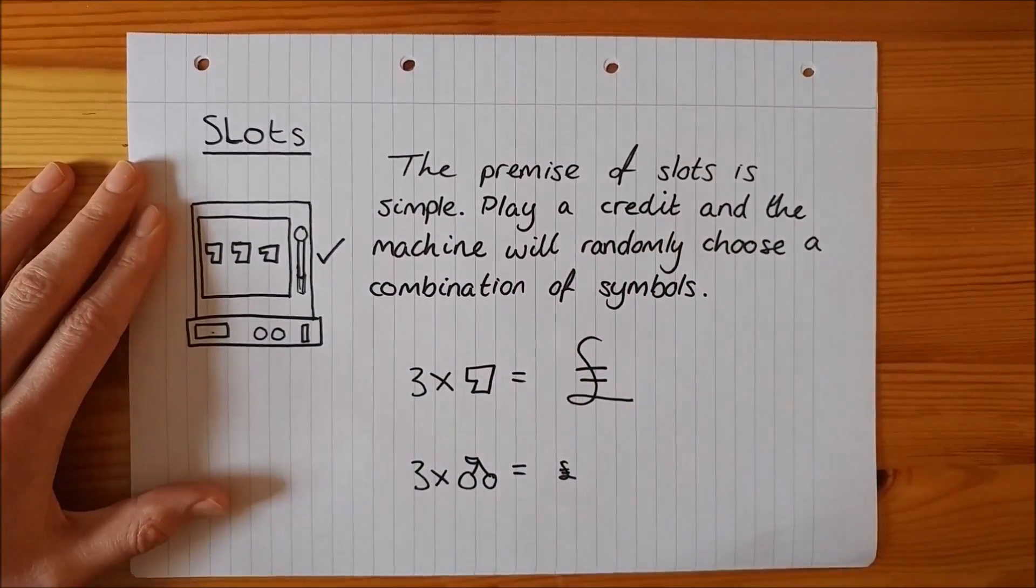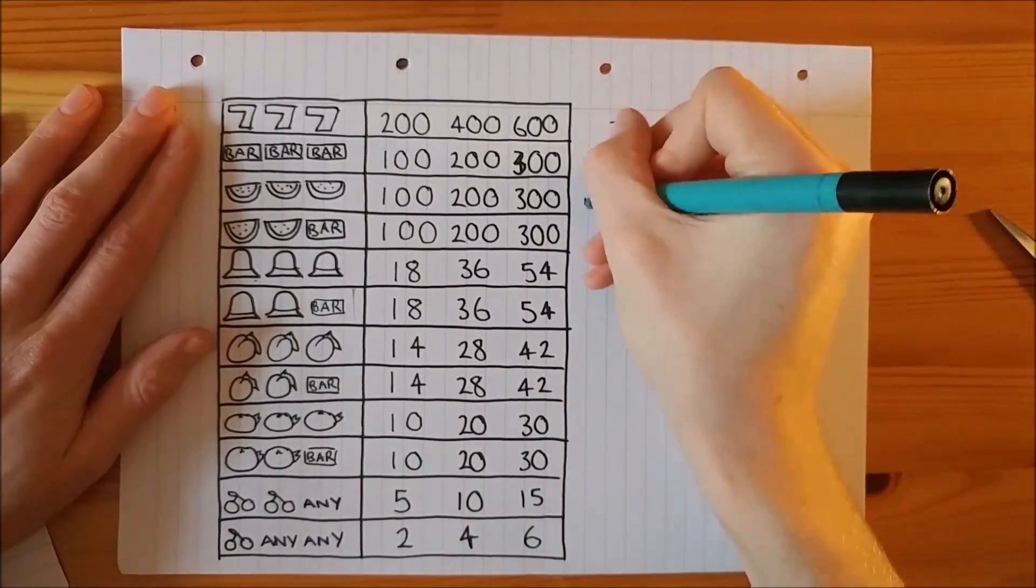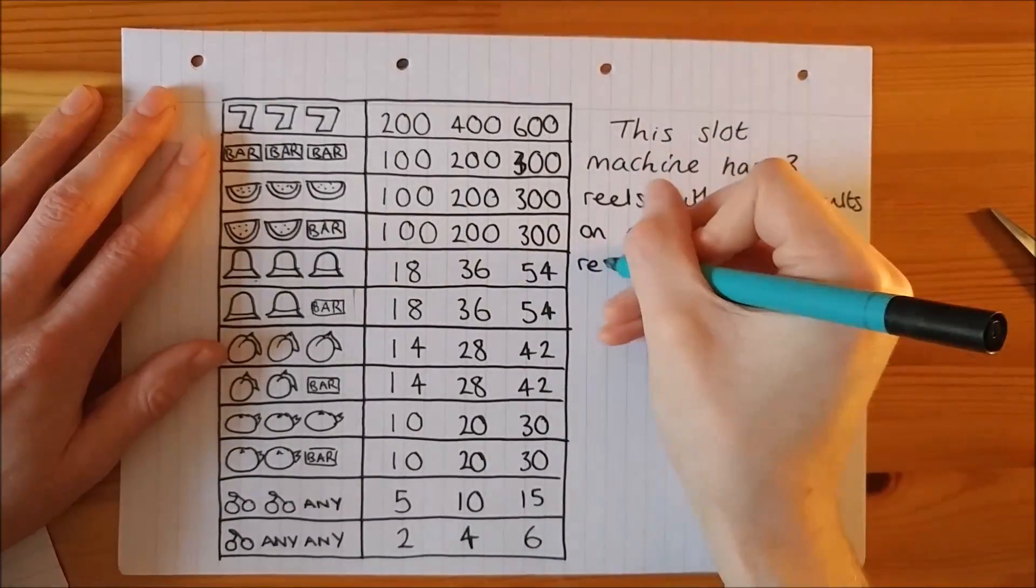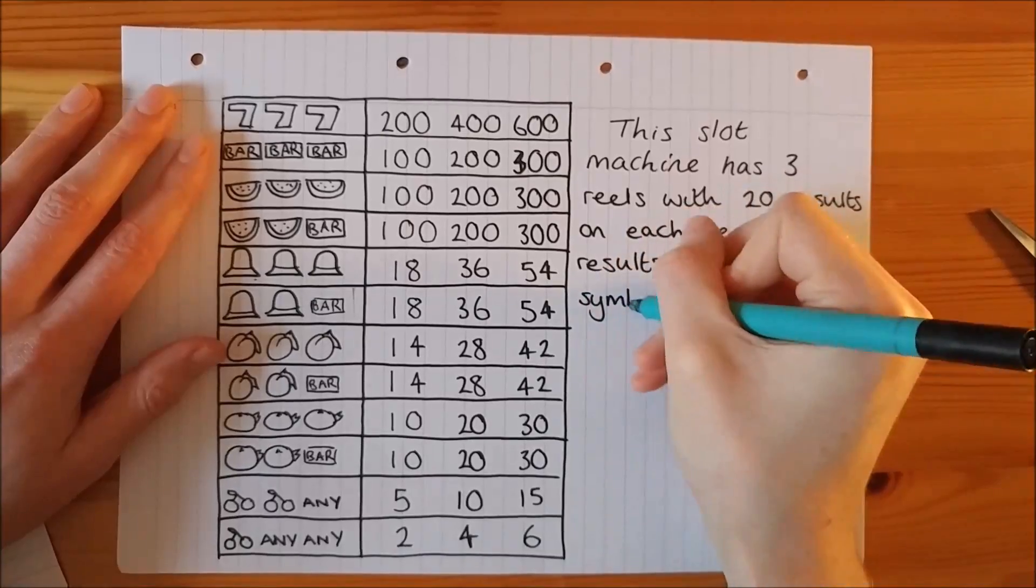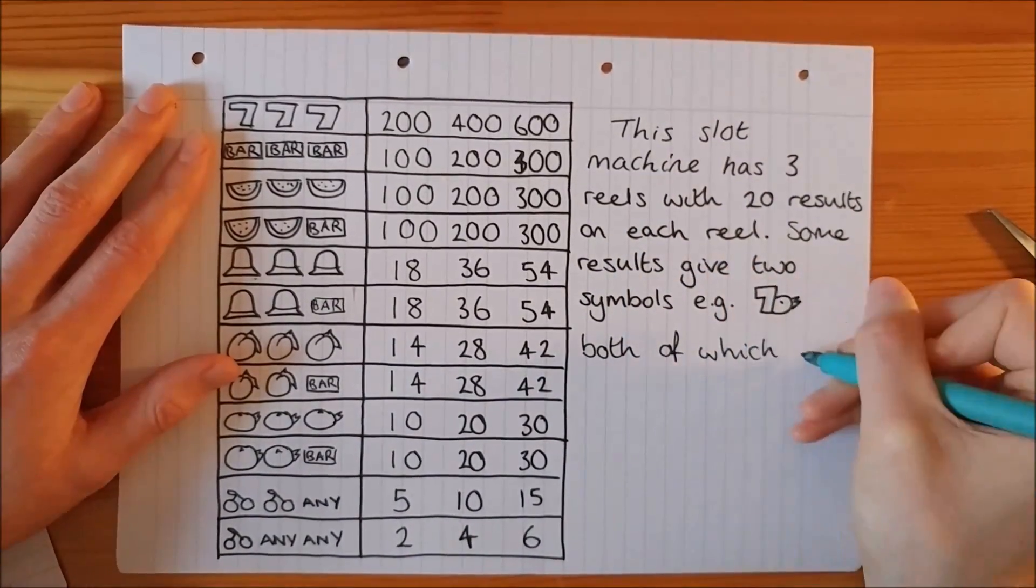In this video, we will be working with the following pay table. This slot machine has 3 reels, with 20 possible results on each reel. Some results give 2 symbols, for example 7 and orange, both of which can be used in making a line.